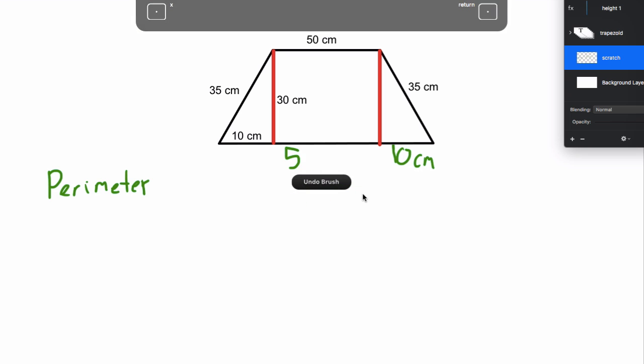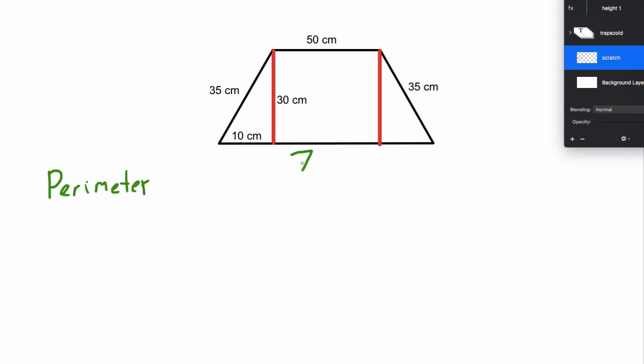Now I have the base, I can move forward. Let me rewrite it: 70 centimeters. And now the perimeter is as easy as could be. I'm just going to take 50 plus 35 plus 35 plus 70.